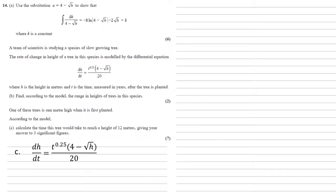At the moment, we've got t and h both on the same side. Let's get that h over to the left-hand side where we can then make an integral with dh. So dividing through by 4 minus root h, we get 1 over 4 minus root h dh by dt equals t to the power of 0.25 over 20.